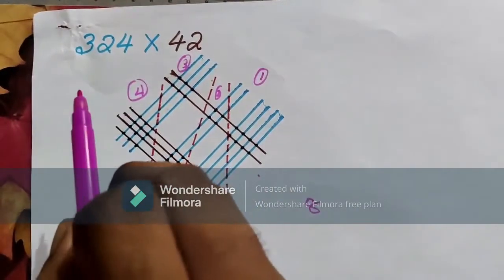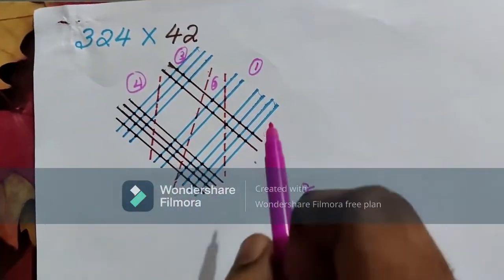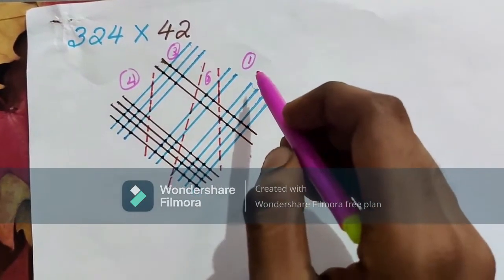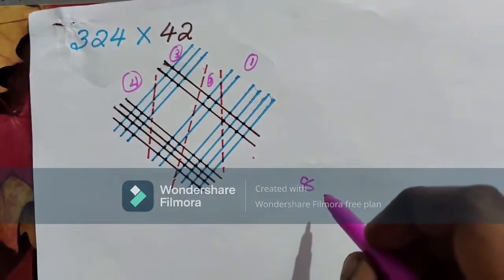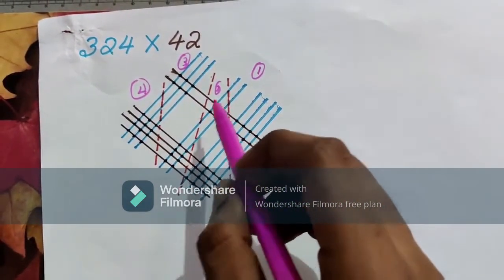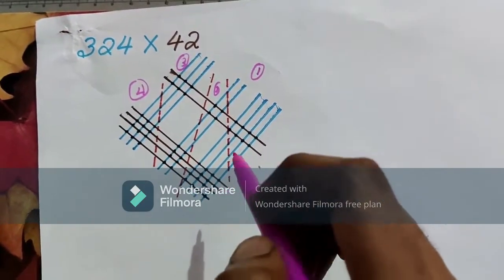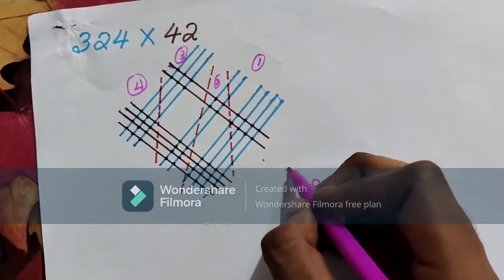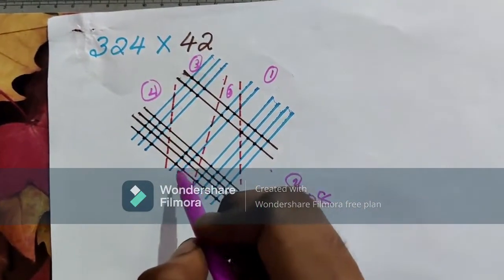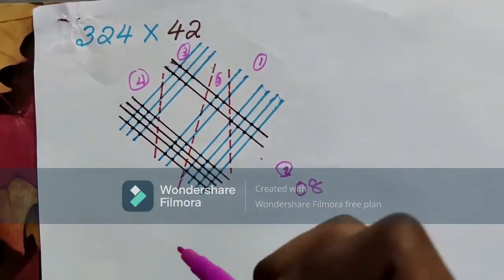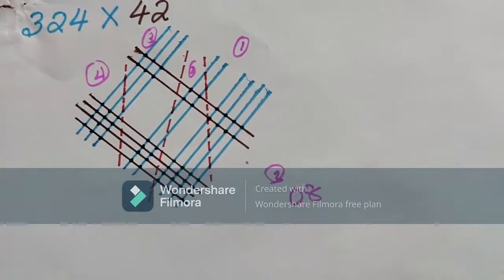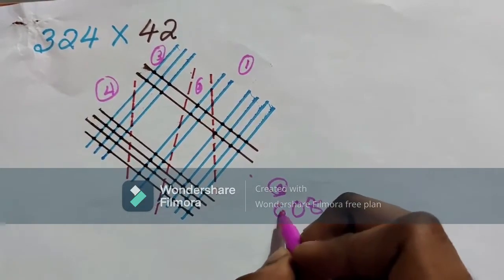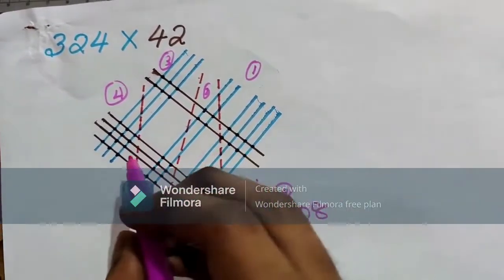Here we are multiplying one 3-digit number and another 2-digit number by drawing the figure. We are dividing the figure into 4 segments. In the first segment we are counting the points and putting them in the units place. Then going to the second segment and counting the points in the second segment: here 4, 16, 20 and carry over 2. Going to the third segment there are 14 points plus 2 equals 16.